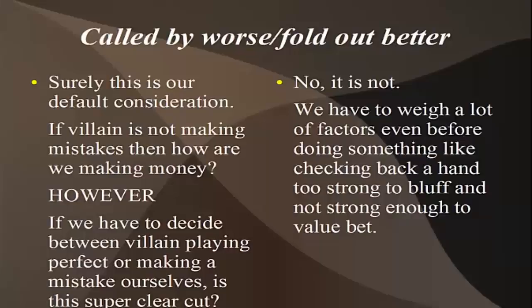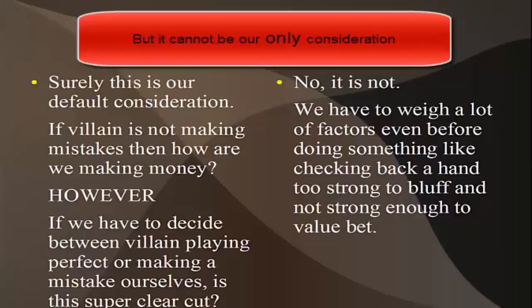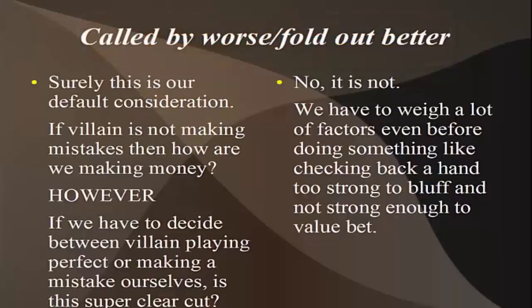These are the things to think about. The big main premise — our default consideration when thinking about c-betting the flop or checking it back — can we be called by worse? Will we fold out better? And I mean not just on this street right now, but moving forward in the hand. We do have to be forward-thinking: what cards can come on turns and rivers, what's that going to do for our perceived range, our opponent's range, what it's going to do to our actual hand equity, equity distributions, fold equity. It has to start with this.